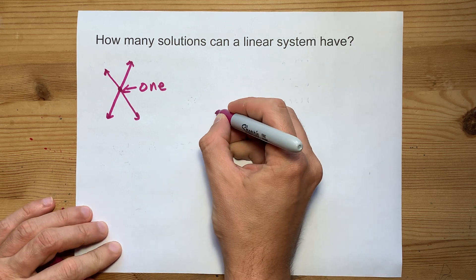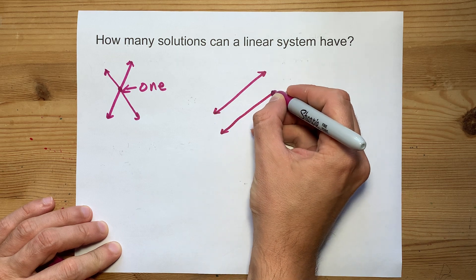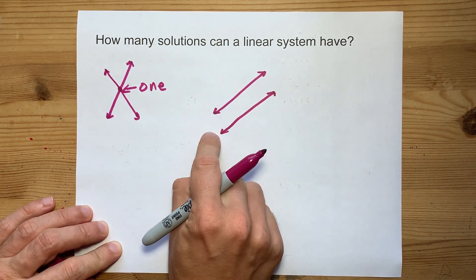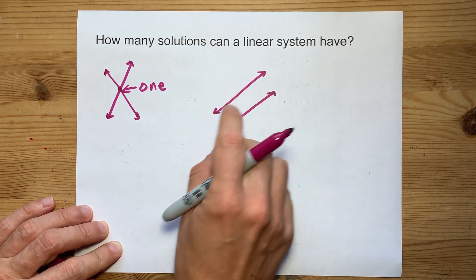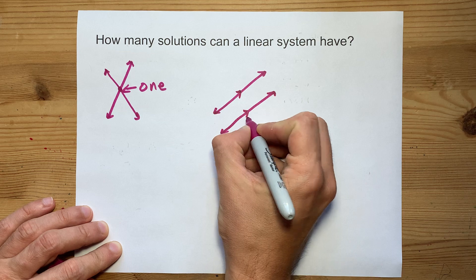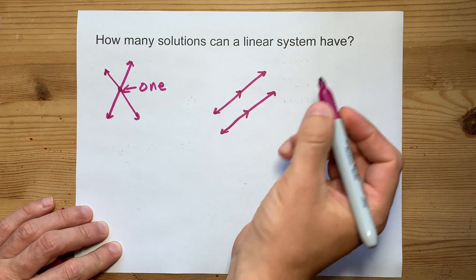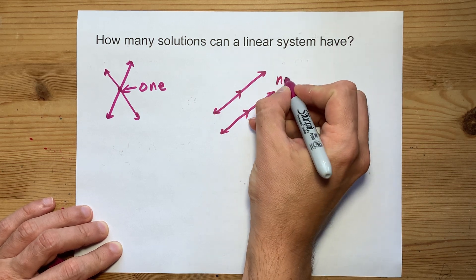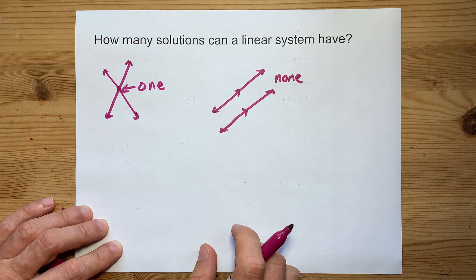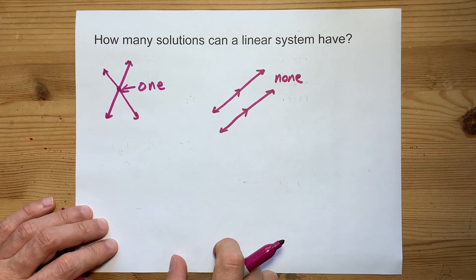If the two lines have the same slope, meaning they travel at the same angle or steepness, then we have to consider one other thing. If the two lines have the same slope and are separate from each other, they are parallel — they go forever in both directions and will still never touch. This has no points of intersection, and there is no solution to this linear system.